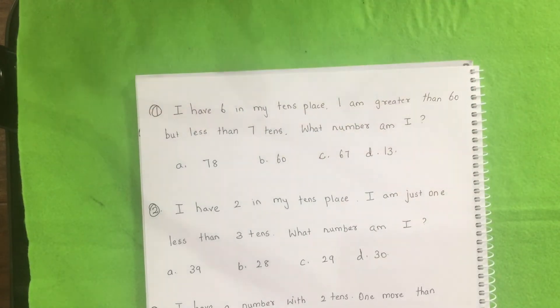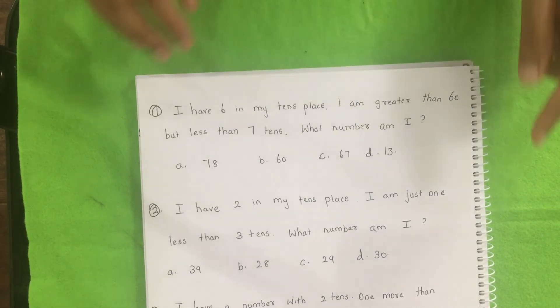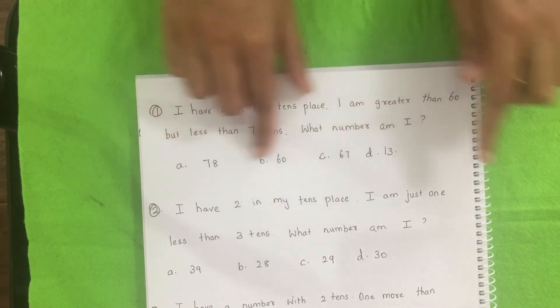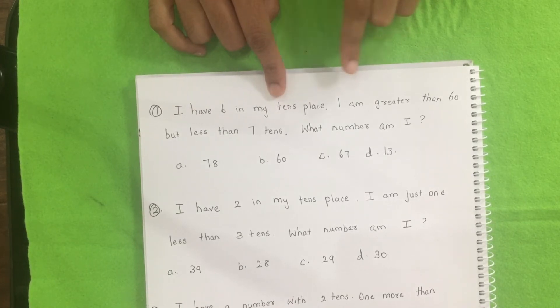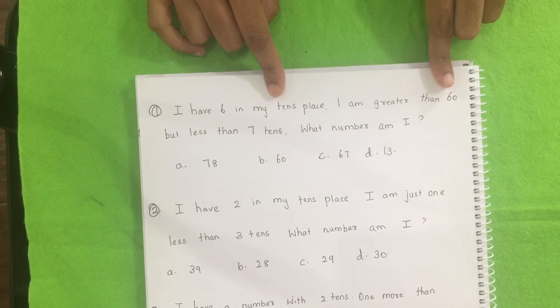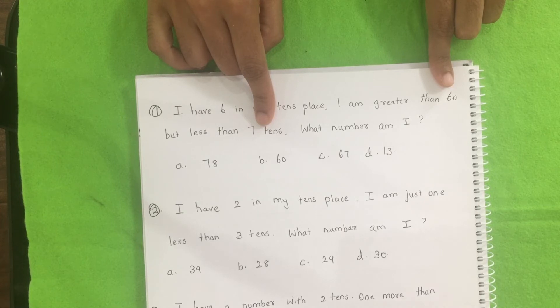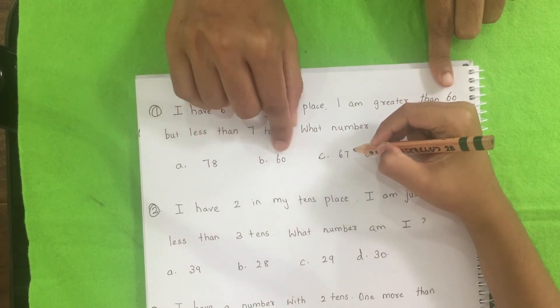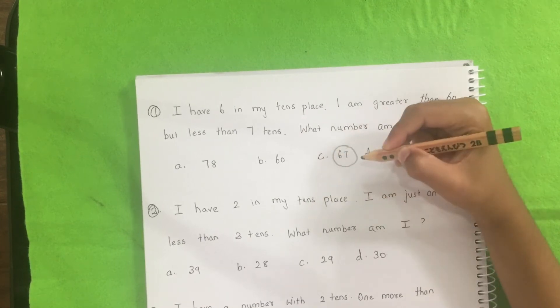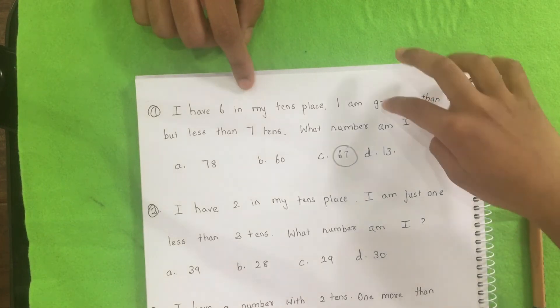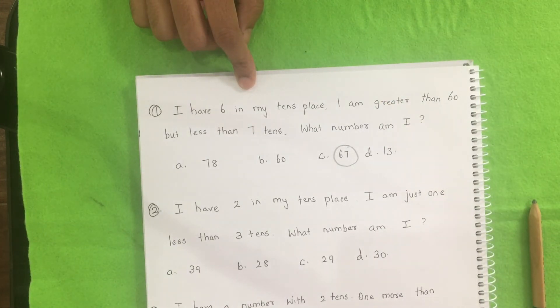This is also a riddle, but it's a little bit tricky, I would say. And it's best to try for older kids. And here I have given the options also. And the question goes like this. I have six in my tens place. I'm greater than 60. But less than seven tens. What number am I? Am I 78, 60, 67 or 13? I am 67. How? Because my mom said it's higher than 60. That means greater than 60. And it's less than 70. So I told 67. Good.